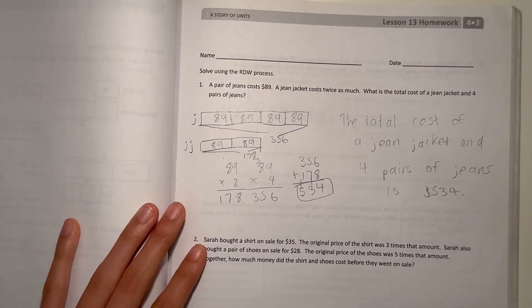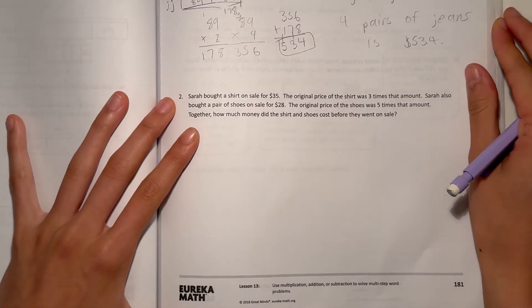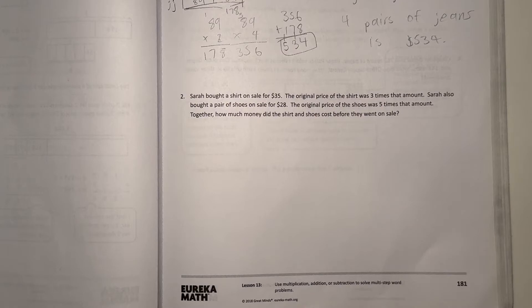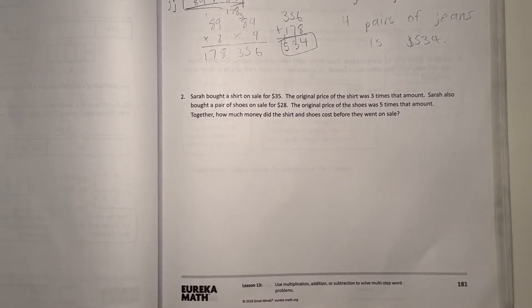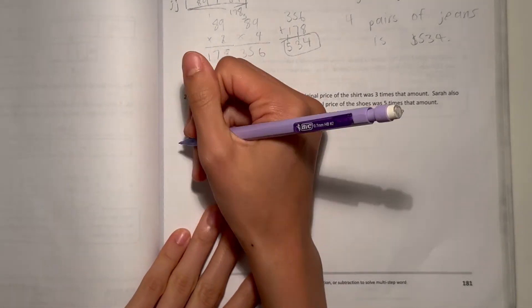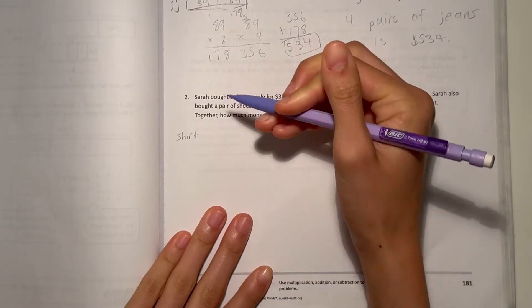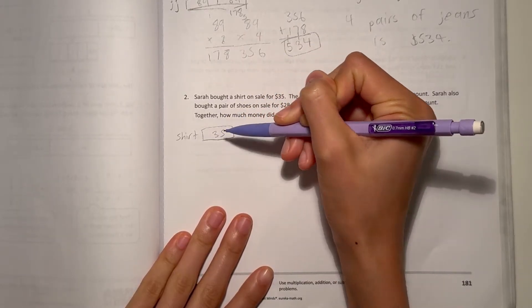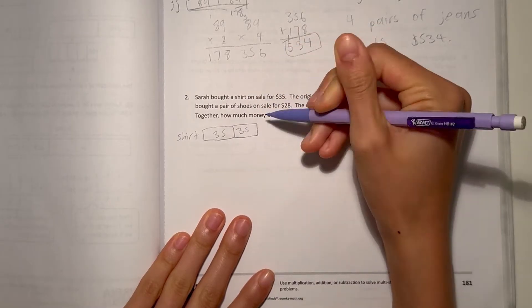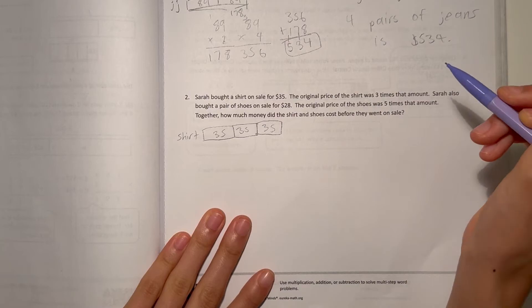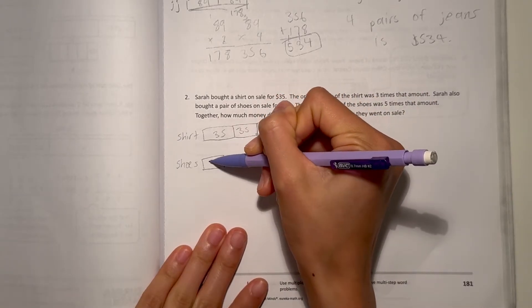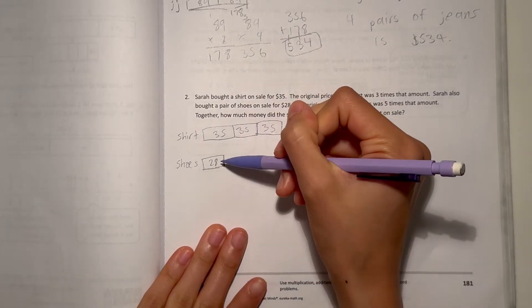Number two, Sarah bought a shirt on sale for $35. The original price of the shirt was three times that amount. Sarah also bought a pair of shoes on sale for $28. The original price of the shoes was five times that amount. Together, how much money did the shirt and shoes cost before they went on sale? The shirt was $35, but the original price was three times that amount. So it's $35 three times. And then for the shoes, she bought it for $28, but the original price was five times that amount. So five times $28.